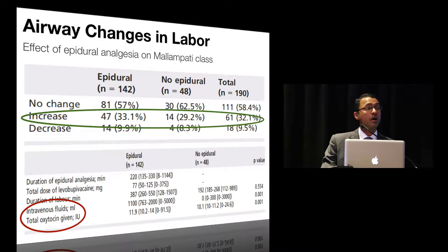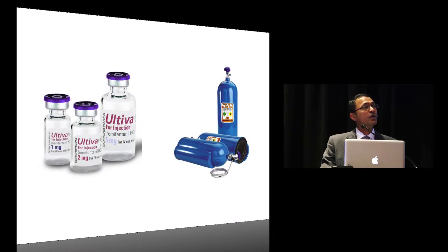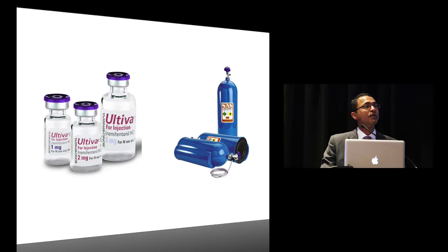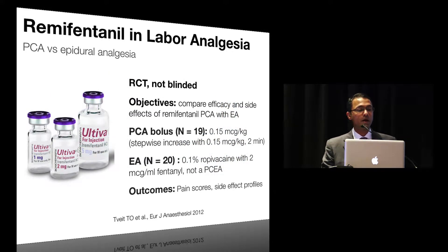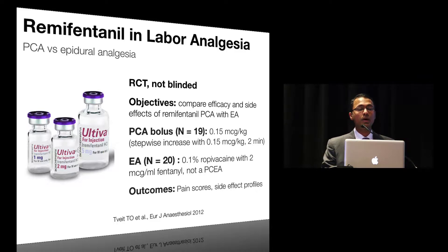Moving on to hot topics in obstetric analgesia, there's a lot of interest in non-neuraxial techniques for labor. Two such interventions have recently caught on: the use of remifentanil for labor analgesia, and the gradual introduction of nitrous oxide into practice in the United States. I'm going to highlight one randomized controlled trial from Norway, which aimed to compare the efficacy of remifentanil PCA with epidural analgesia. The PCA settings for remifentanil were standard, compared with epidural analgesia using 0.1% ropivacaine and 2 mcg/ml of fentanyl.